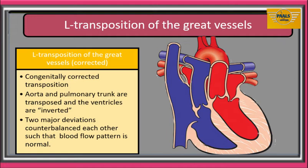The double inversion of the ventricular chambers and great vessels counterbalance each other such that the blood flow pattern becomes normal.